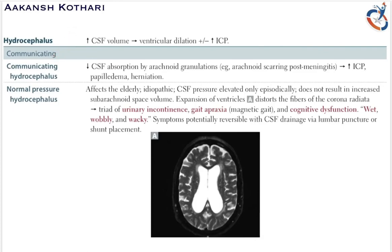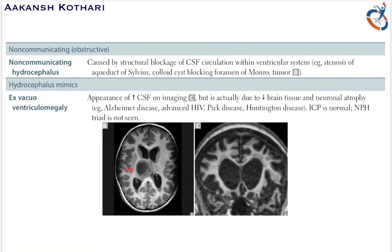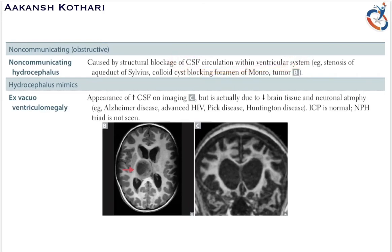Non-communicating hydrocephalus is usually due to structural blockage of CSF circulation within the ventricular system. Whenever a structure blocks the movement of cerebrospinal fluid in the ventricles it can lead to non-communicating hydrocephalus. Examples include stenosis of the aqueduct of Sylvius, colloid cyst blocking the foramen of Monroe, or a tumor.